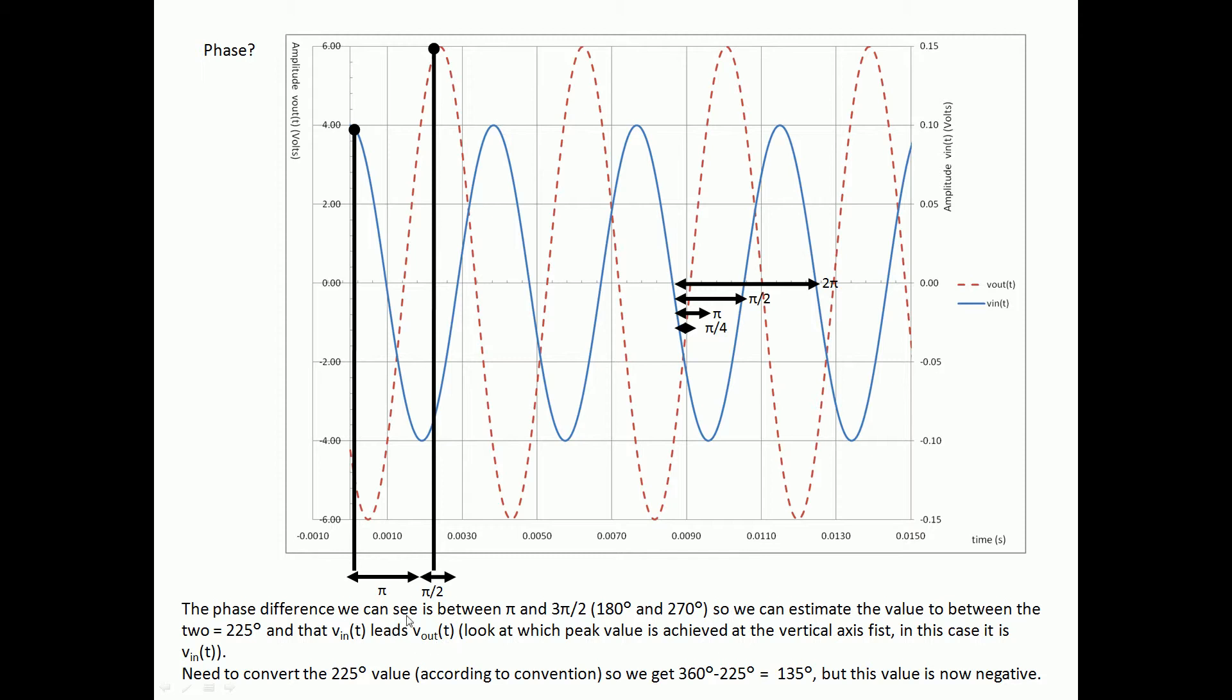So we can see that V_in leads V_out by 225 degrees. However, we said before we don't really like to have values that are greater than 180 degrees, so we're going to convert our 225 degree value into a less than 180 degree value. So if we do 360 minus 225 we get 135, but the value is now negative. That's the direction of the phase shift.